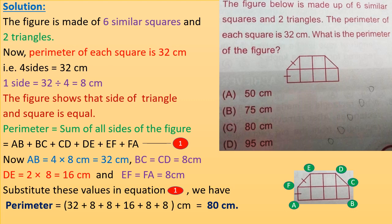Next question: the figure below is made up of 6 similar squares and 2 triangles. The perimeter of each square is 32 cm. What is the perimeter of the figure? Since perimeter is the sum of all sides, one side equals 32 divided by 4 equals 8 cm.